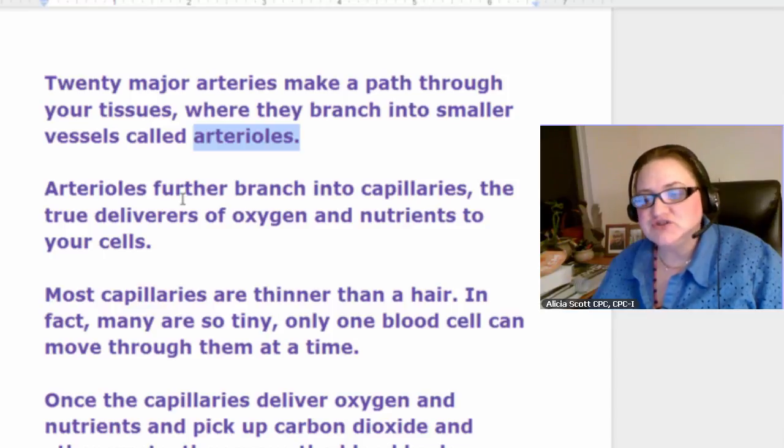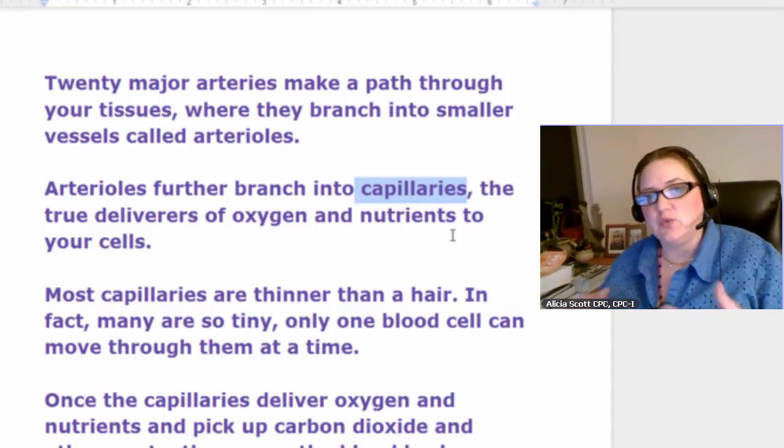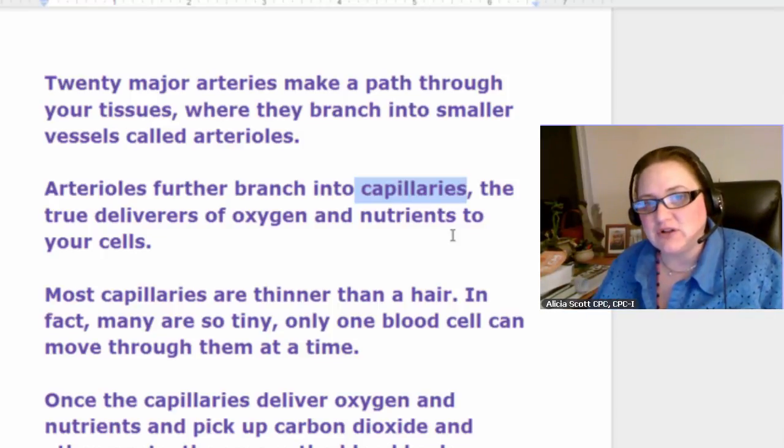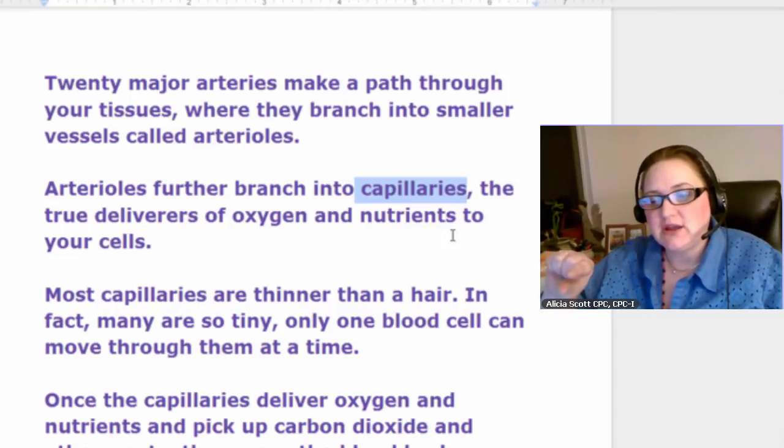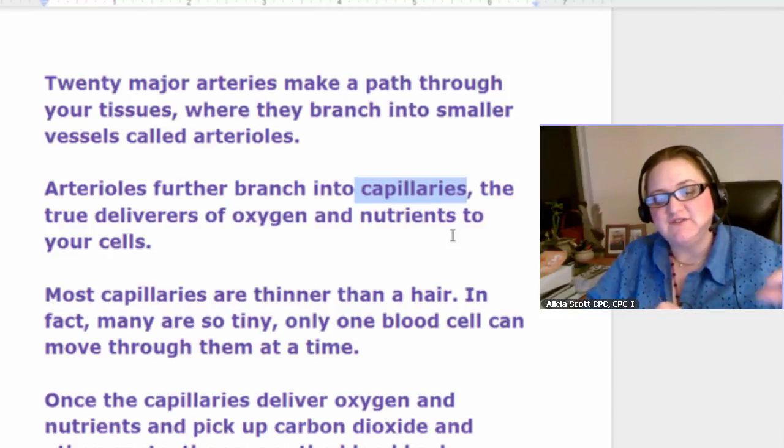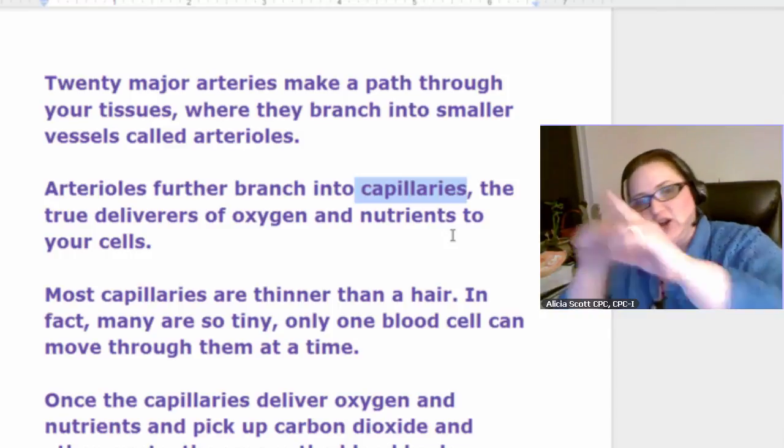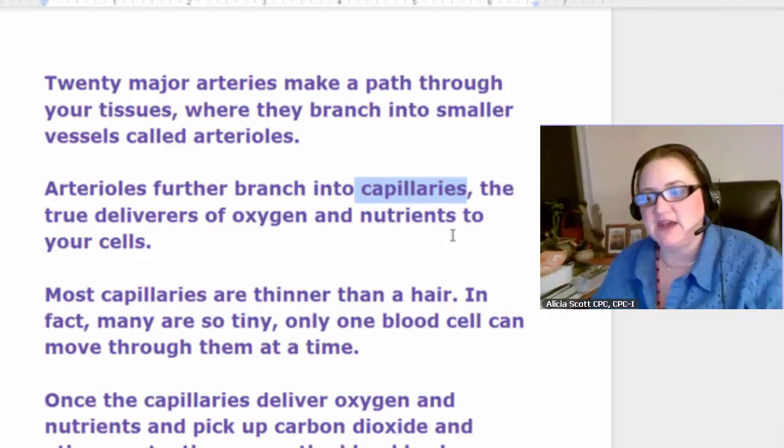The arterioles further branch into capillaries, you need to know what capillaries are. The true deliverers of oxygen and nutrients to your cells. The exchange of oxygen and the waste coming out of the blood happens on the capillary level. So, you have artery, arterial, capillary, venules, veins, heart, lungs and it makes that path again and again.